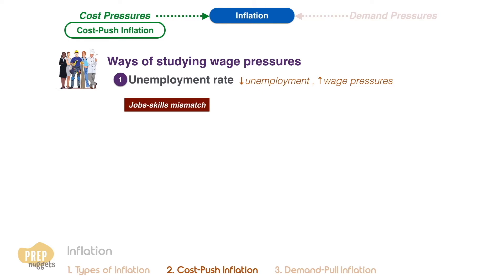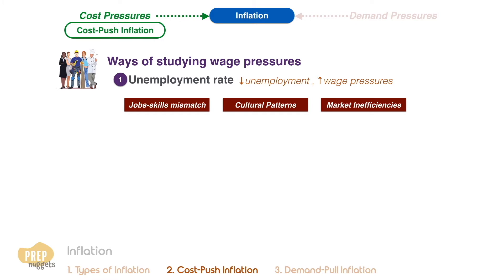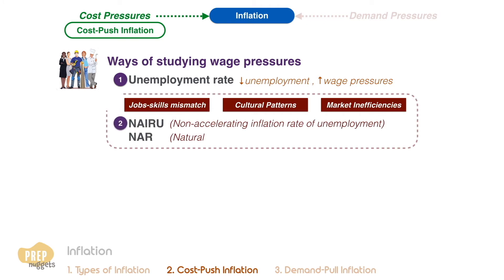Factors such as job skills mismatch, cultural patterns that despise certain jobs, and inefficiencies in the labor market can mean the economy is facing labor shortages even though the unemployment rate is not that low. A better indicator that encompasses these aspects of the labor market is the non-accelerating inflation rate of unemployment, or the natural rate of unemployment. You just need to be aware that they can be better indicators of wage pressures, which is a major factor of cost-push inflation.